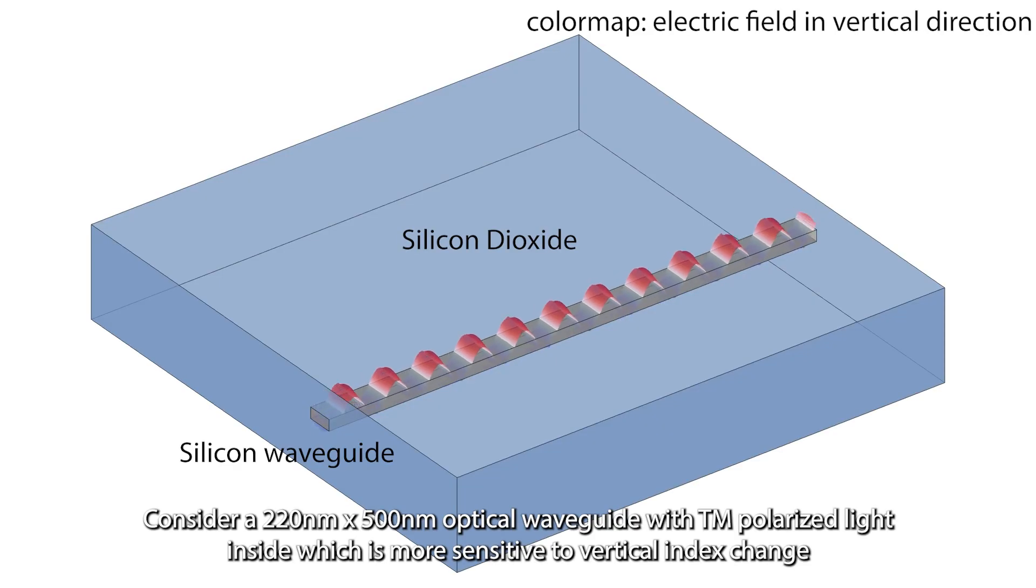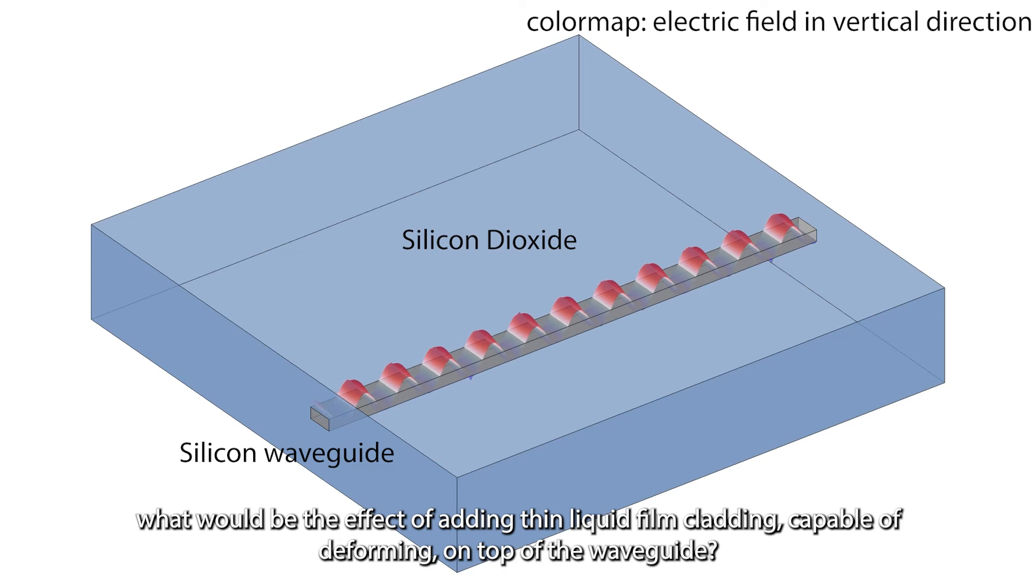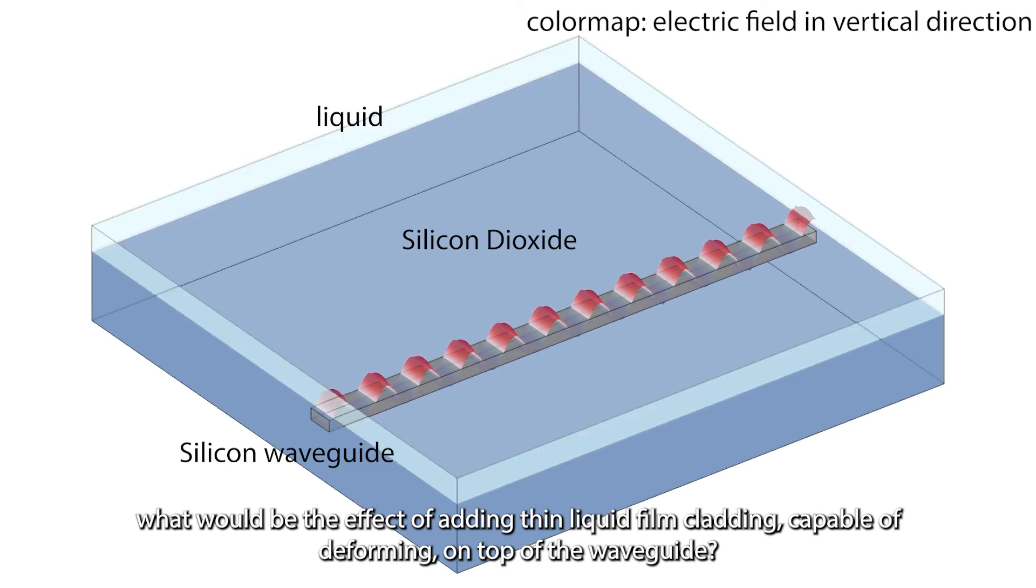Consider a 220 by 500 nanometer optical waveguide with TM polarized light inside, which is more sensitive to vertical index change. What would be the effect of adding thin liquid film cladding, which is capable of deforming on top of the waveguide?